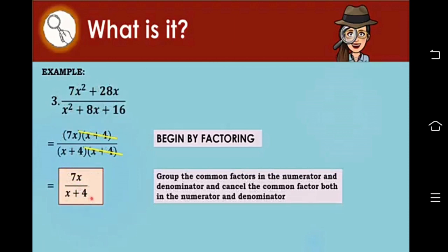For number 3, we have 7x squared plus 28x over x squared plus 8x plus 16. We factor the numerator by taking the common monomial factor 7x, giving 7x times the quantity of x plus 4. For the denominator, this is a perfect square trinomial whose factored form is the square of a binomial. We can write it as the quantity of x plus 4 times the quantity of x plus 4. We then factor out x plus 4 from both numerator and denominator, leaving 7x over x plus 4.